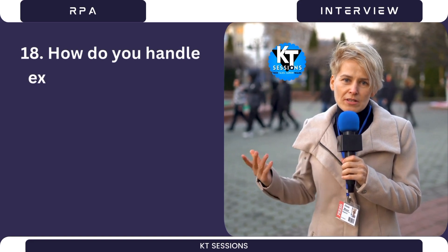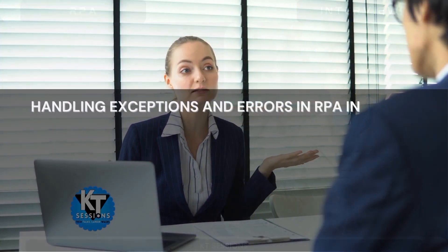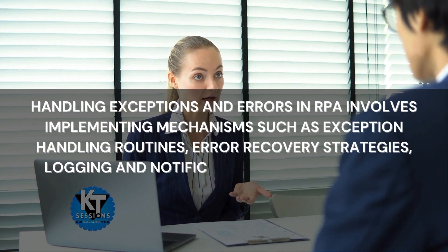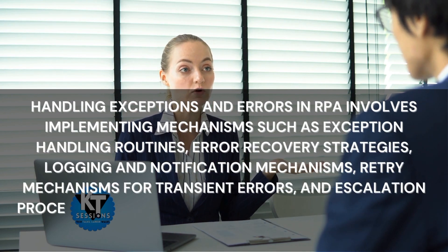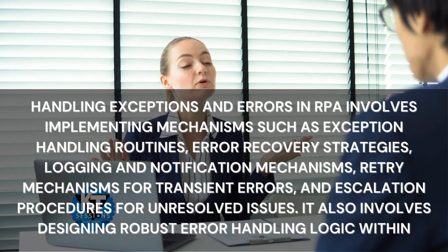Question 18: How do you handle exceptions and error handling in RPA? Handling exceptions and errors in RPA involves implementing mechanisms such as exception handling routines, error recovery strategies, logging and notification mechanisms, retry mechanisms for transient errors, escalation procedures for unresolved issues, and designing robust error handling logic within automation workflows.